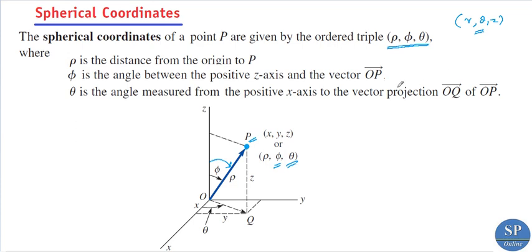And θ is actually the same θ defined in the cylindrical coordinates. The third coordinate θ is the angle between the positive x-axis and the projection of OP onto the xy-plane. So the spherical coordinate system is (ρ, φ, θ).